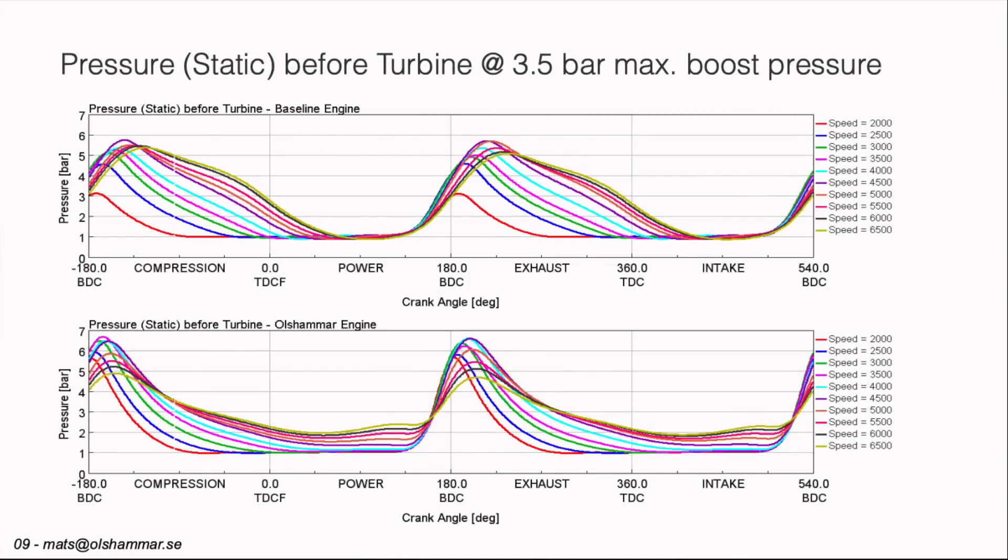We can also see that the pressure before the turbine is different. The top curves are different colors for different RPMs. And here we can see that they go down to one bar which is the same pressure as the surrounding air, which means there is no extra pressure on the turbine there.